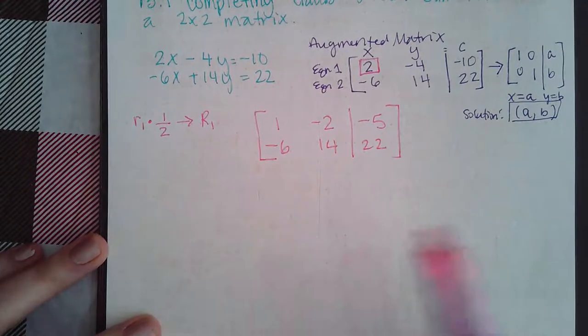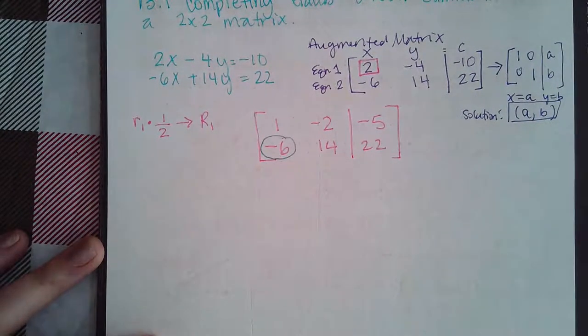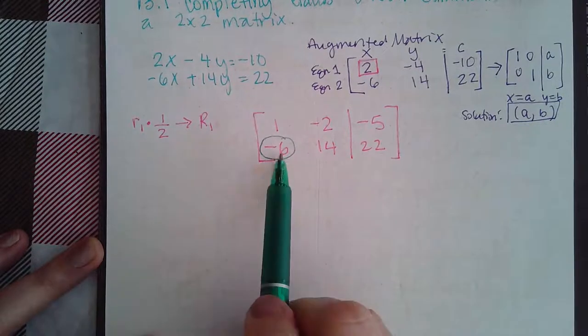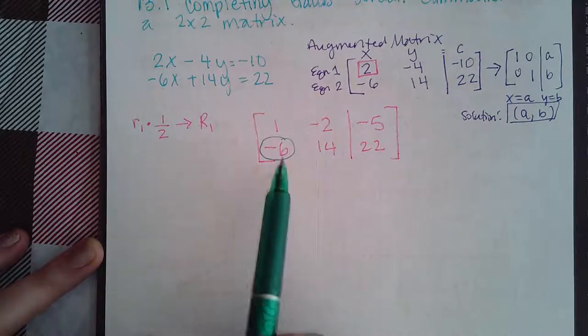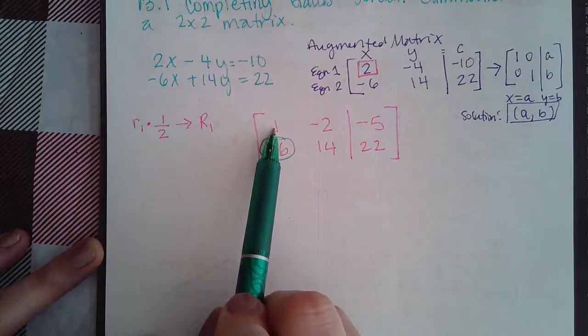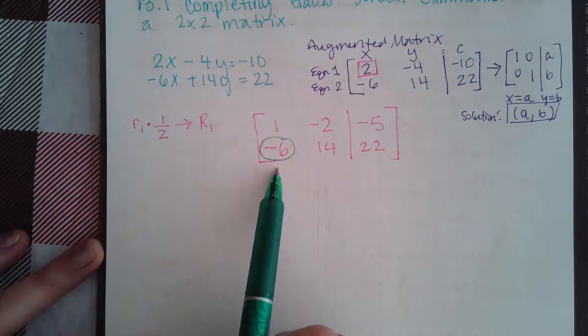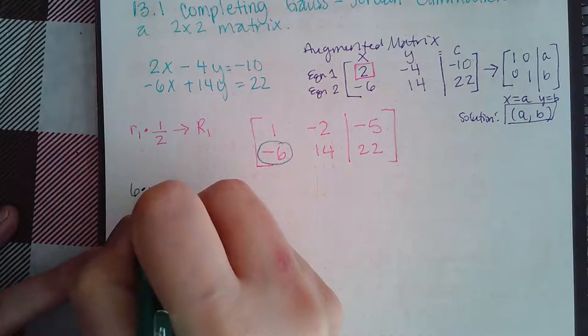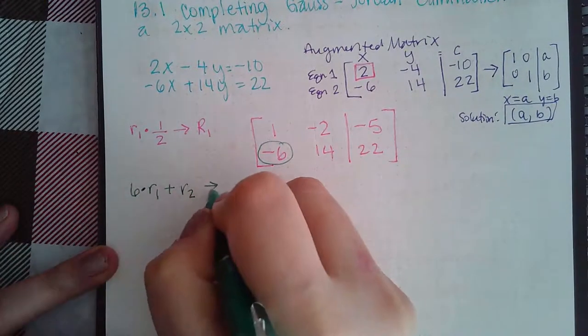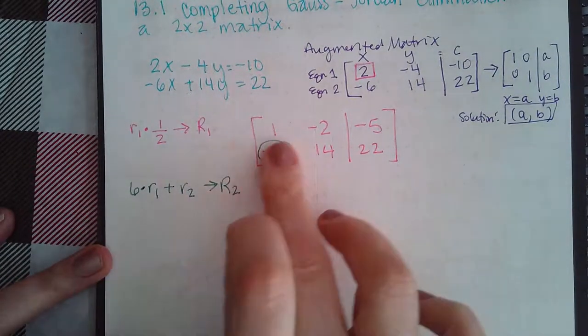Next, I need to change this guy into a 0. Now, in order for me to change it to a 0, I have to use this 1 to get this to be 0. So, if I multiply this 1 by a positive 6, a positive 6 plus a negative 6 will give me 0. So, I'm going to go positive 6 times row 1 plus my row 2 to give me that new row 2, so that my 0 is right here in row 2.